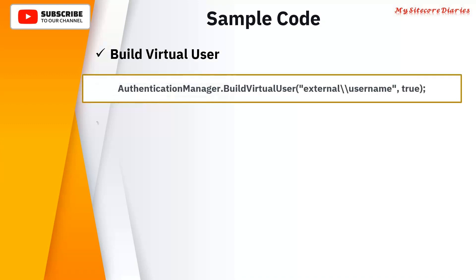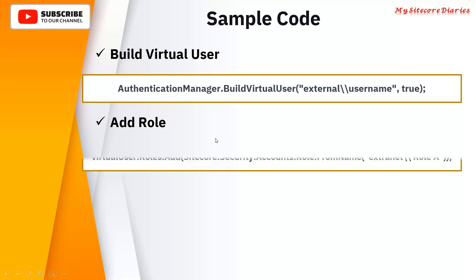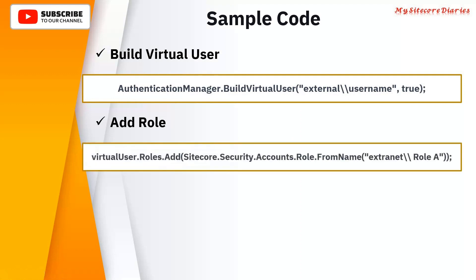The next step is to add the role. On the virtual user you built, to assign a role you use the method on that user itself: Roles.Add. Roles.Add provides the option to associate the role to that virtual user, and that can be done using the FromName method — Sitecore.Security.Accounts.Role.FromName. You know the name of the role which you created in step one. Use that role name, it will give you that role object, and that will get assigned to your virtual user.